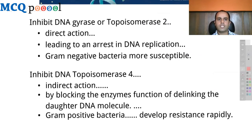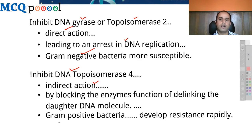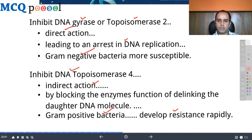Inhibition of DNA gyrase (topoisomerase 2) is a direct action, leading to arrest in DNA replication; gram-negative bacteria are more susceptible. Inhibition of topoisomerase 4 is an indirect action, blocking the enzyme's function of delinking daughter DNA molecules. Gram-positive bacteria are known to develop resistance rapidly through mutations in topoisomerase 4.